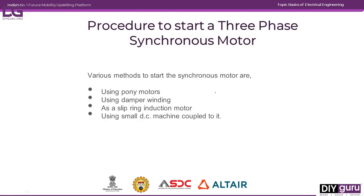After starting, we can remove the external device and the rotor will rotate at synchronous speed on its own. There are several methods to start the synchronous motor: using a small auxiliary motor, using damper winding (along with the actual rotor winding), using a slip-ring induction motor, or using a small DC machine coupled to the shaft of the synchronous motor.